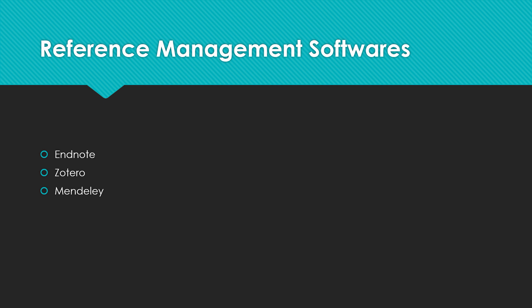You can also use reference management software, which makes the reference management task very easy and effective. Some reference management software options are EndNote, Zotero, and Mendeley. All of them have their own pros and cons, so please explore them and select the one you want to use for your research work. A detailed discussion of using these software tools is beyond the scope of this video, but if you want me to make a video on reference management software, please let me know in the comment section.